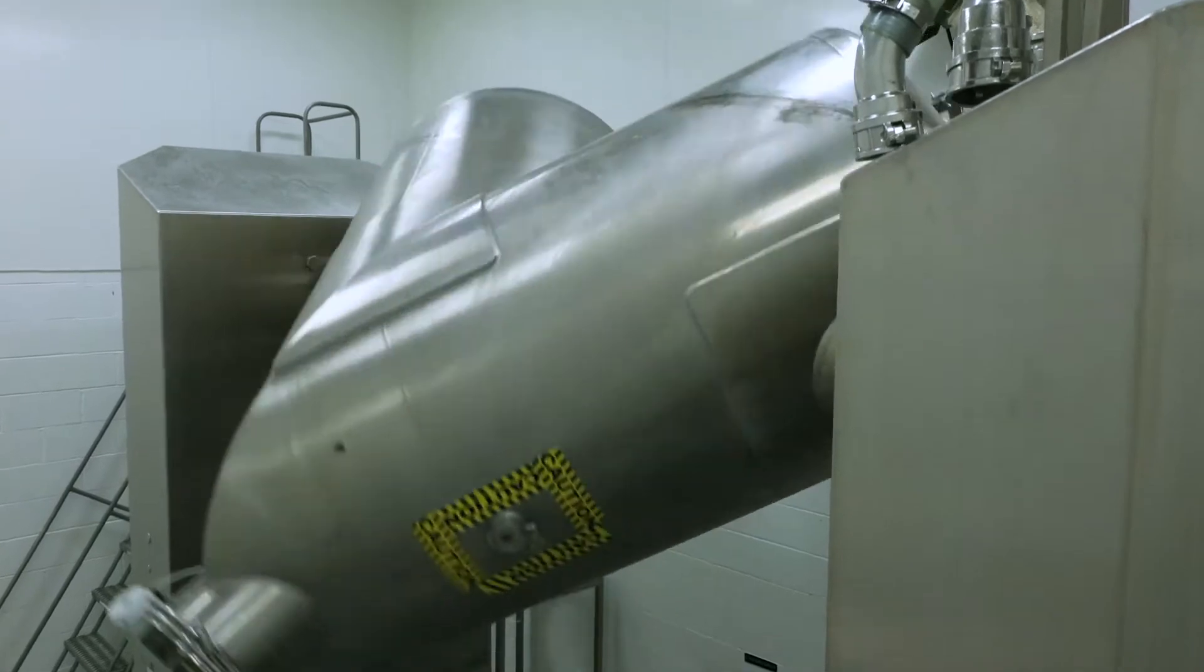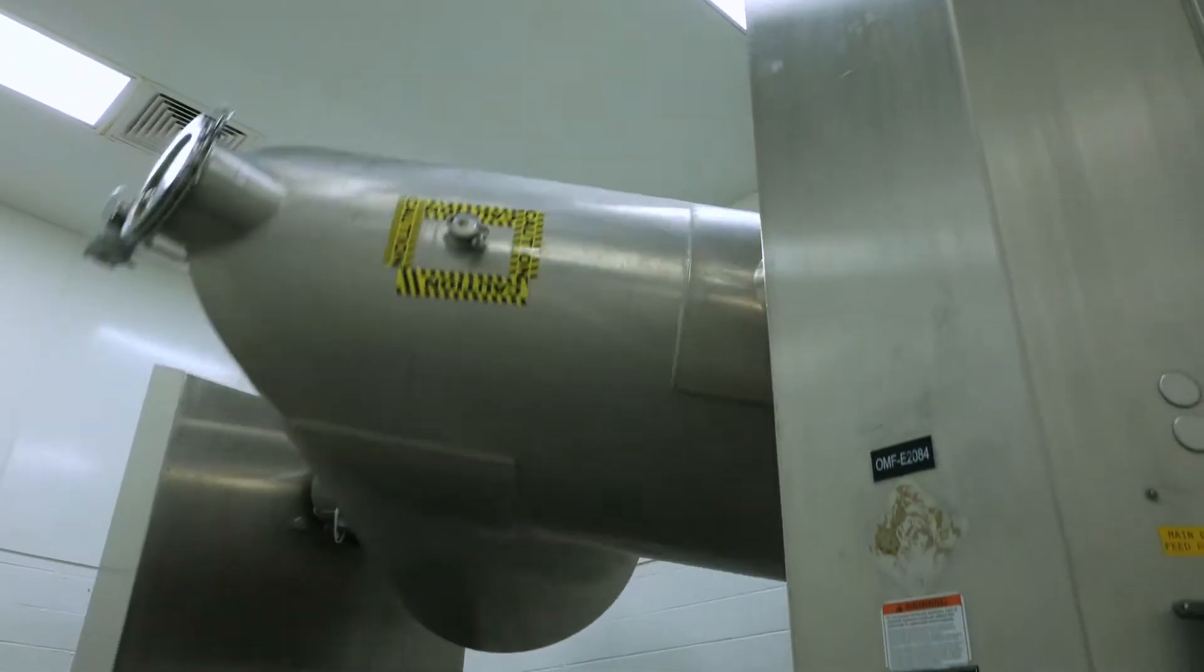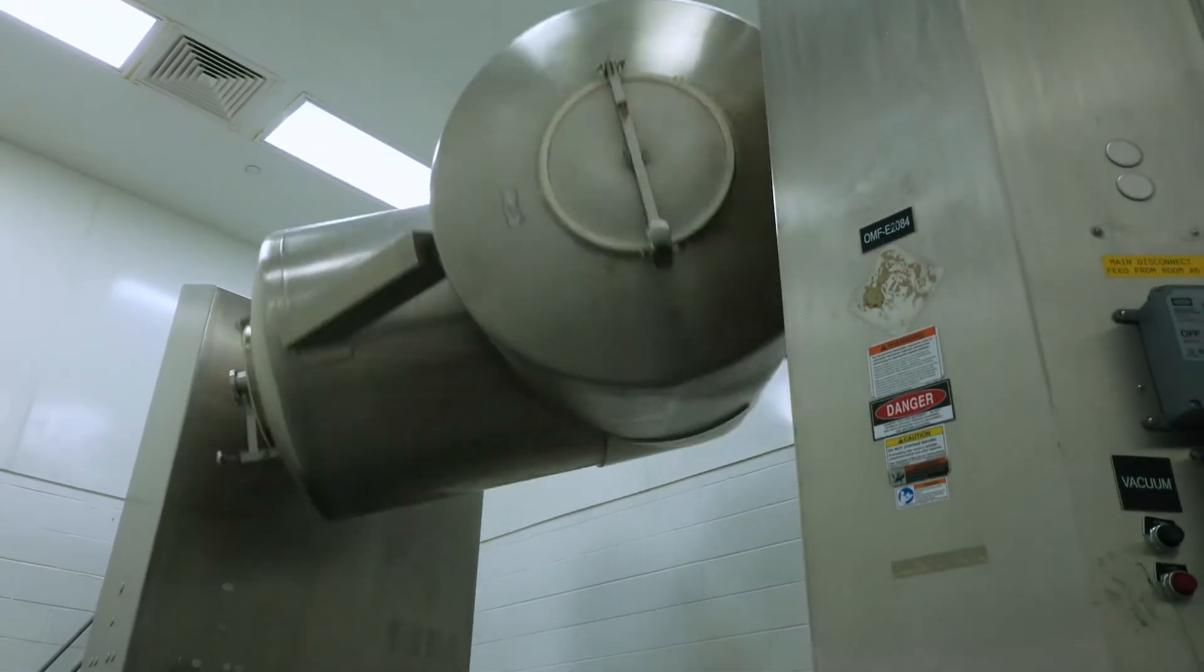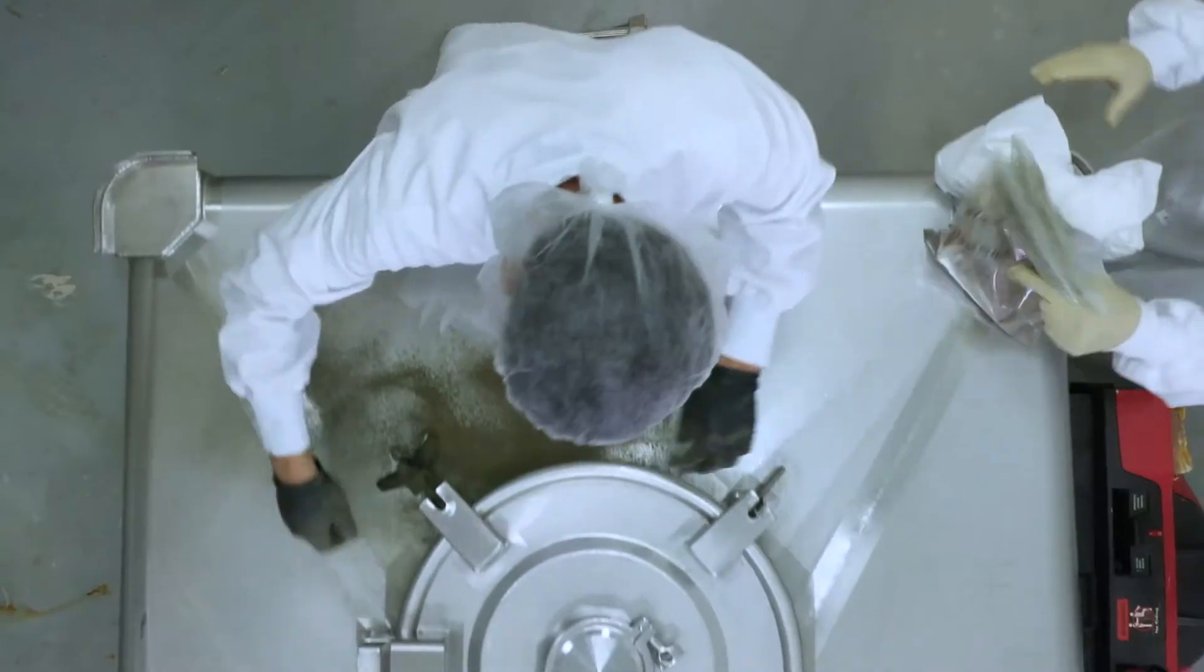Once they have been added to the blender, the Stemregen ingredients are then thoroughly mixed for several hours to ensure a perfectly homogeneous blend.